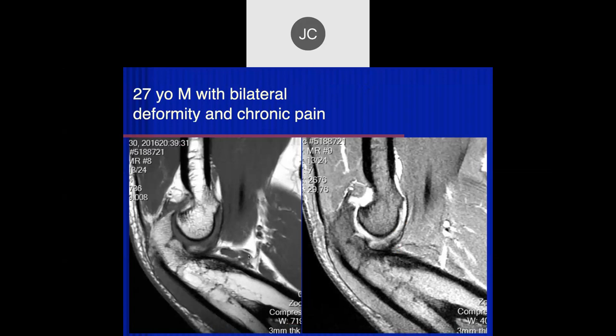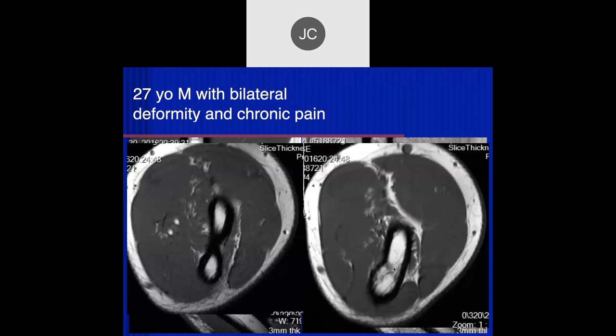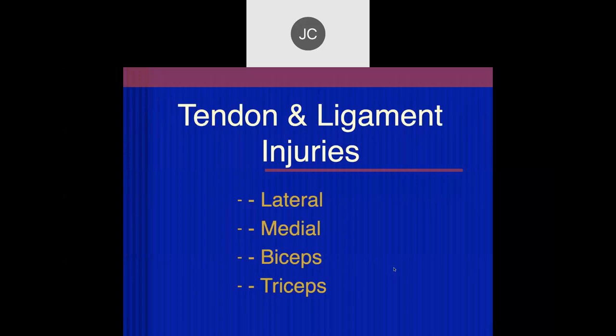This is a 27-year-old with bilateral deformity and chronic pain. It looks like there's a chronic-appearing deformity of that elbow joint - fusion of the radius and ulna. On the axial images we can confirm this is a congenital radial-ulnar fusion. Let's move on to tendons and ligaments - we'll start with the lateral, then go to the medial, then talk about the biceps and triceps.